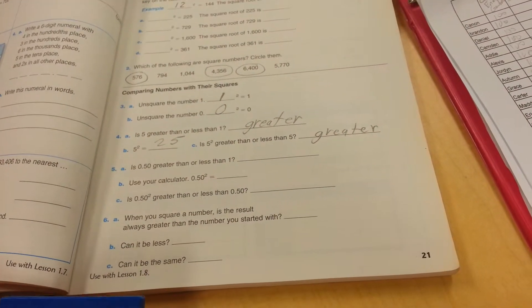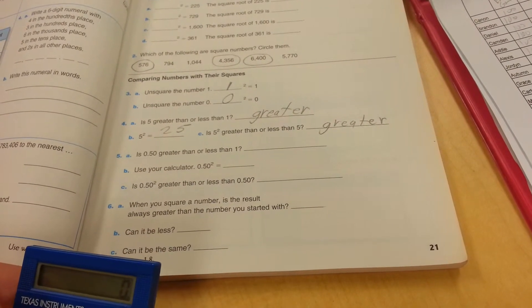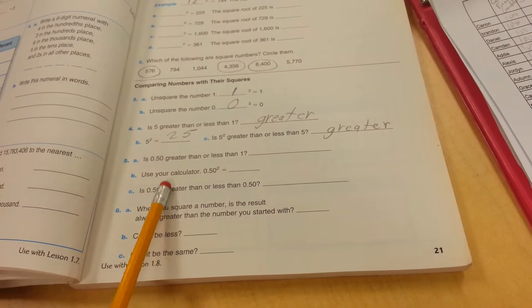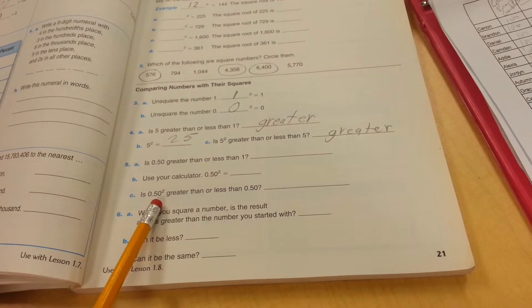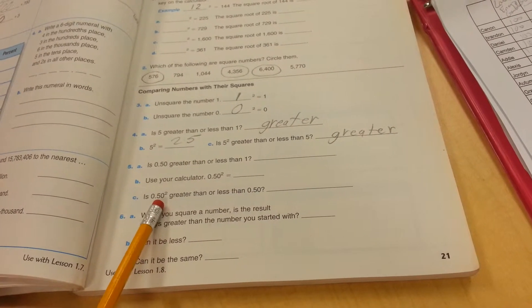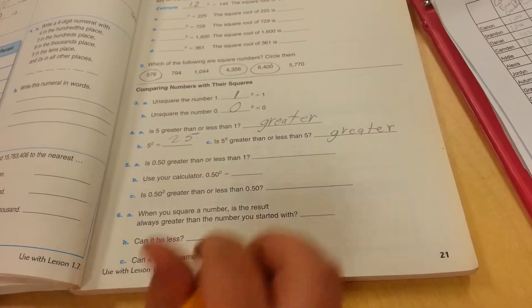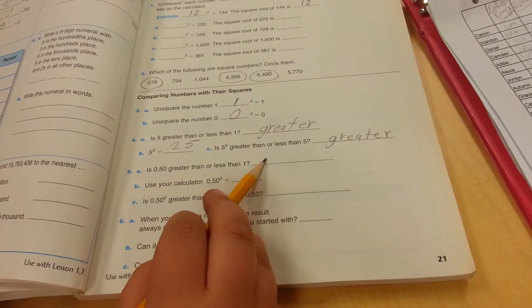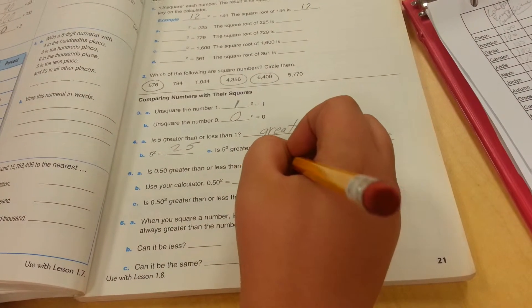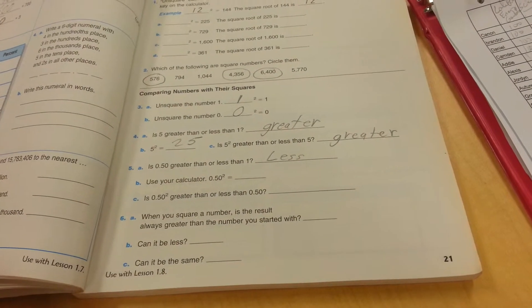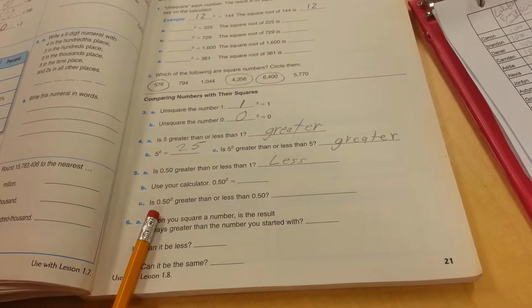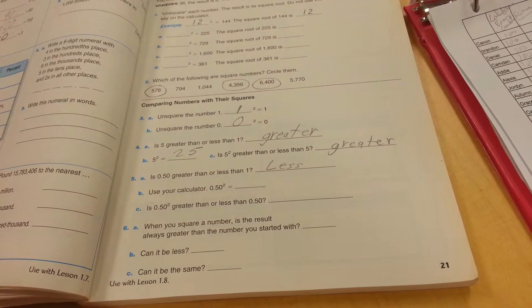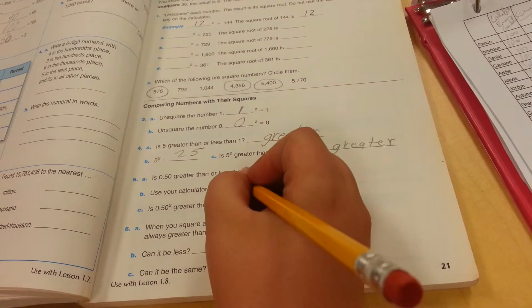Is 50 one-hundredths greater or less than 1 whole? It's like 50 cents or a dollar. Which is bigger? I'm gonna go out on a limb and say it's less. It is less. Use your calculator for this one. What's 5 times 5? 25. So what's 0.50 times 0.50? It's 0.25.